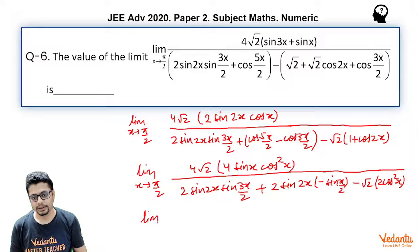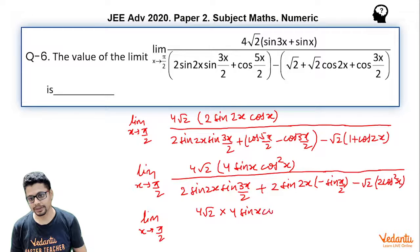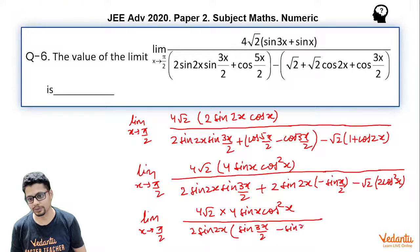Now again I will further manipulate the denominator. The numerator I will keep as it is: 4√2 times 4 sin x cos² x whole divided by. In denominator I will take 2 sin 2x common and I am left with sin(3x/2) minus sin(3x/2) minus sin(x/2) and also minus 2√2 cos² x.